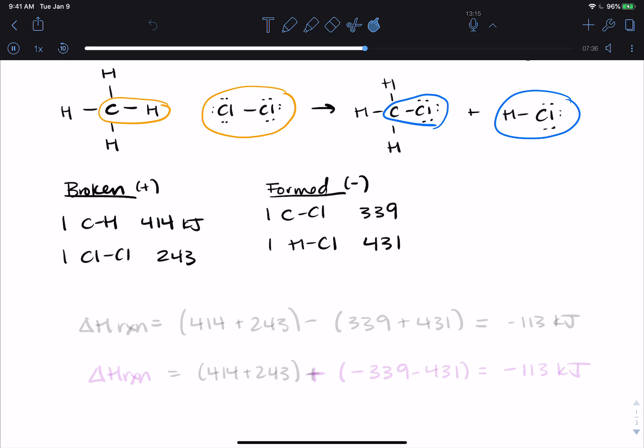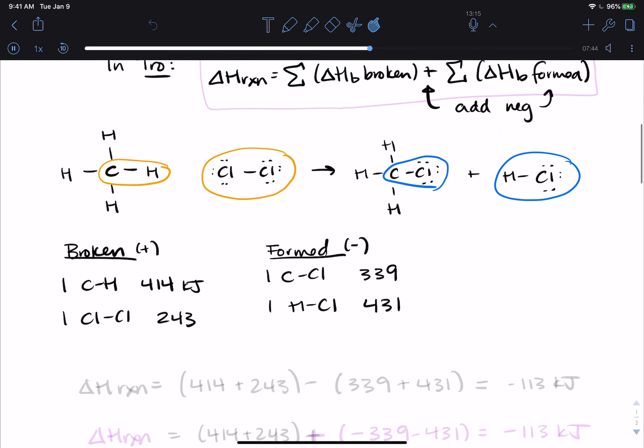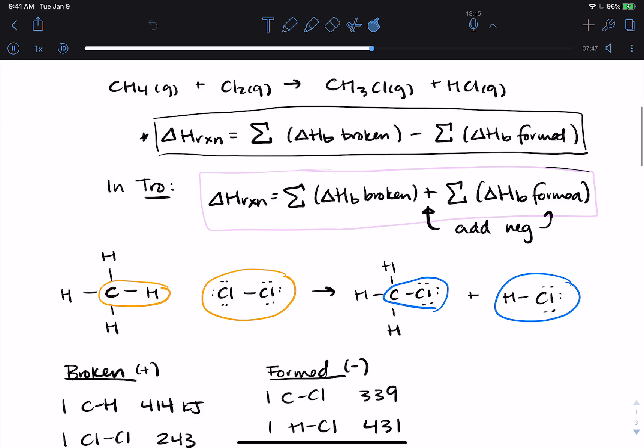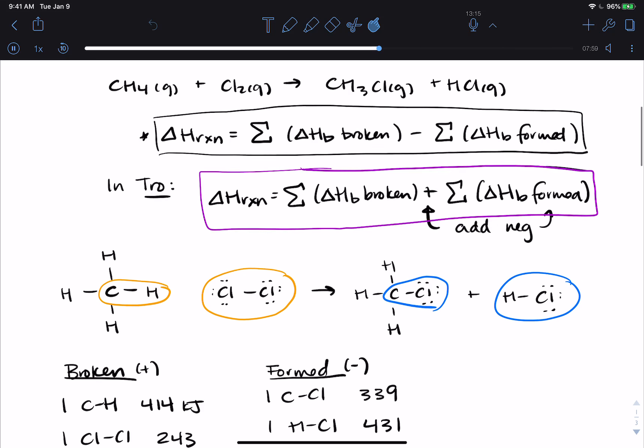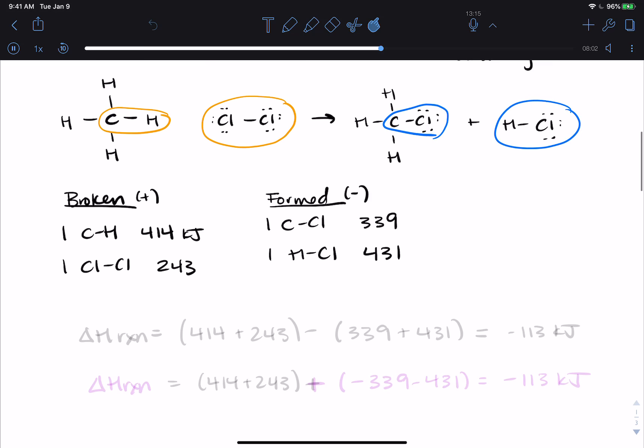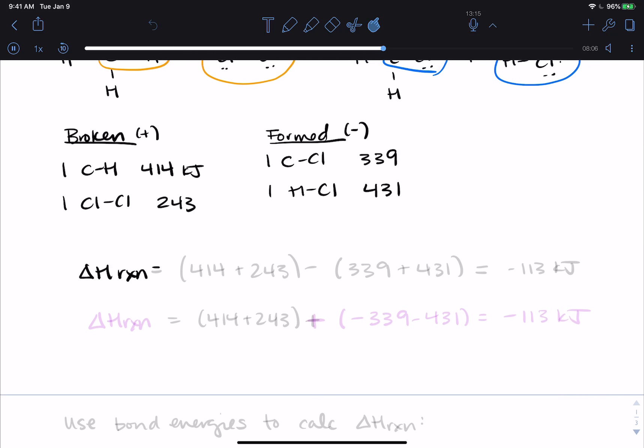So if I have this nice broken minus formed, I just have to dump these values in. And if I'm in Tro, which means circle Tro, I don't know, in purple, we'll show this a couple of ways because we have to add the negative. So in most places, you do broken minus formed. And so our ΔH reaction is broken, which was 414 plus 243 minus the formed, which is 339 and 431. You can see that negative there puts it into place for everything that we need. And so this gives us negative 113 kilojoules.